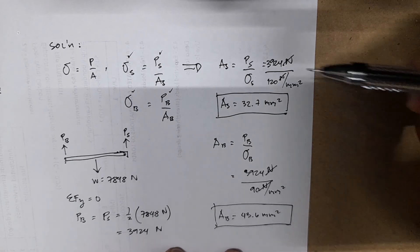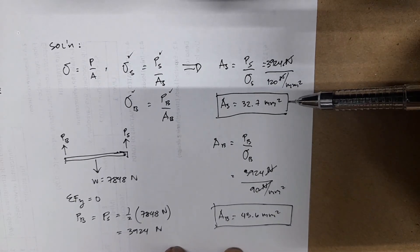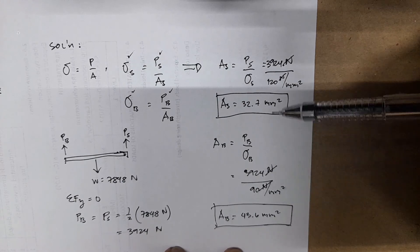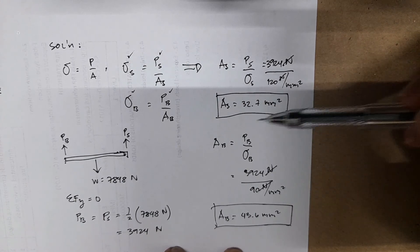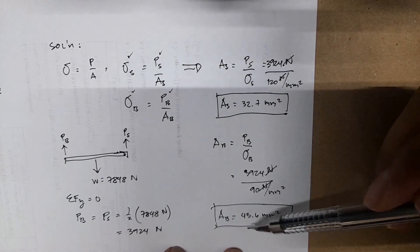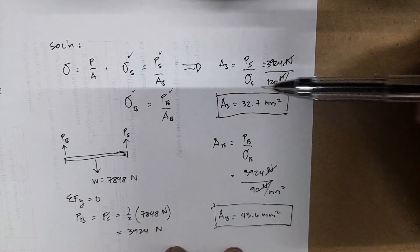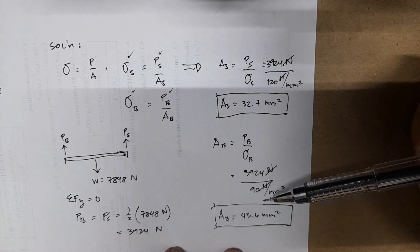You can see the difference because our steel is much stronger compared to our bronze. That's why we only need a smaller cross-sectional area for steel compared to our bronze, which is 43.6, bigger than your steel.